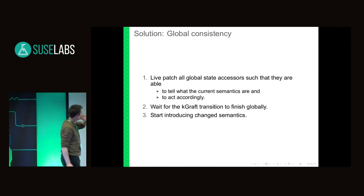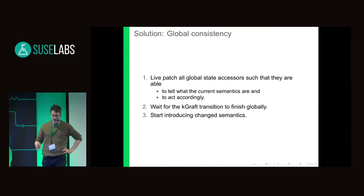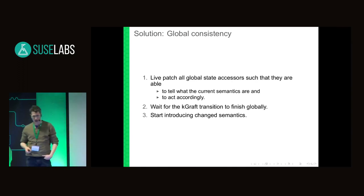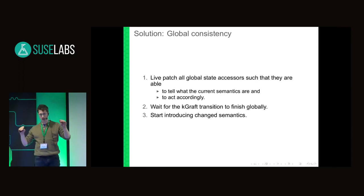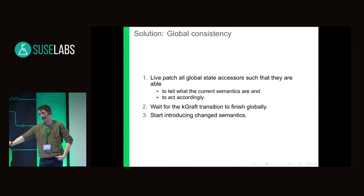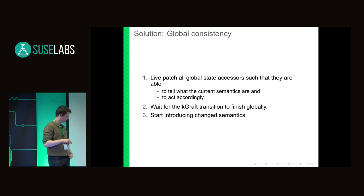The solution is to apply a global consistency pattern. The first step involves live-patching any accesses of the global state to be able to cope with either state version or variant. The second step is to wait until all tasks have transitioned to the live-patch implementation, meaning every task can deal with the new global state semantics. And at the third step, we can actually start changing the semantics.